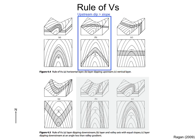Now, let's look at a layer dipping upstream, more than the slope of the valley. In this case, the outcrop trace of the layer makes a V that points in the dip direction, upstream.